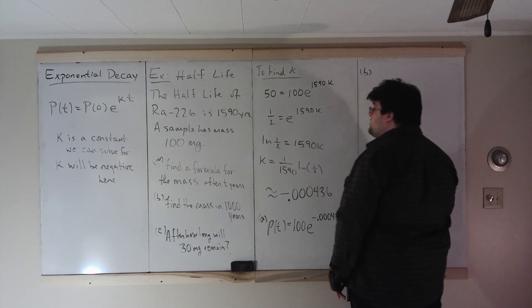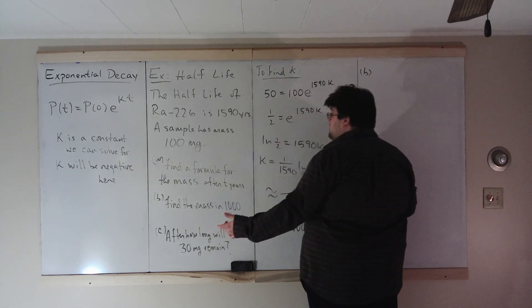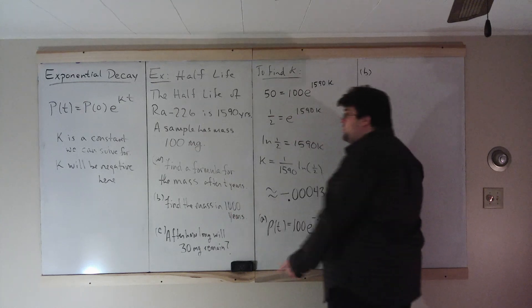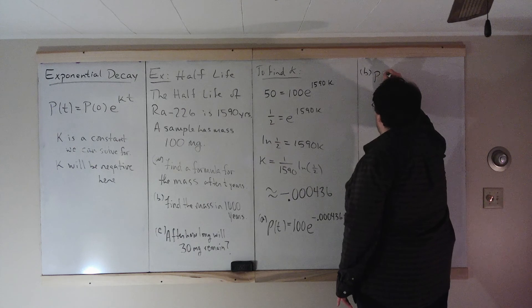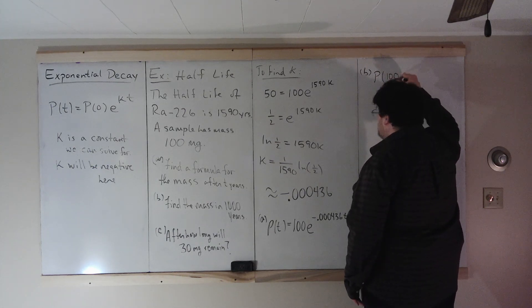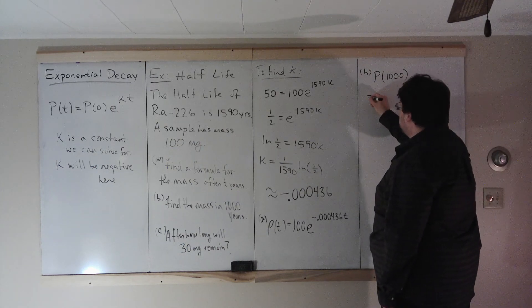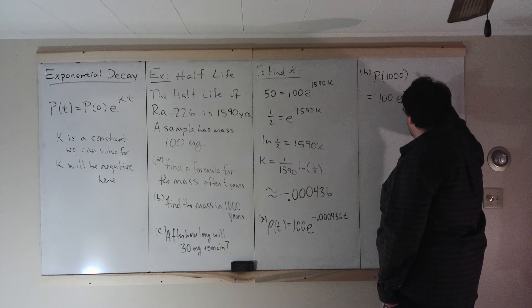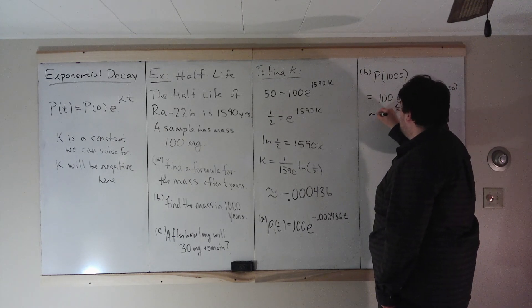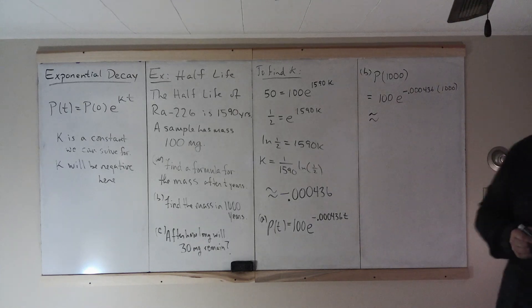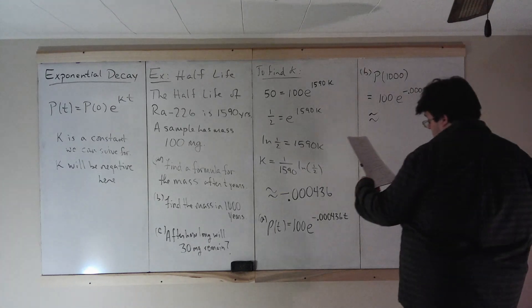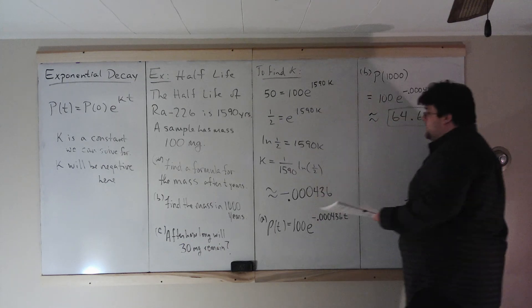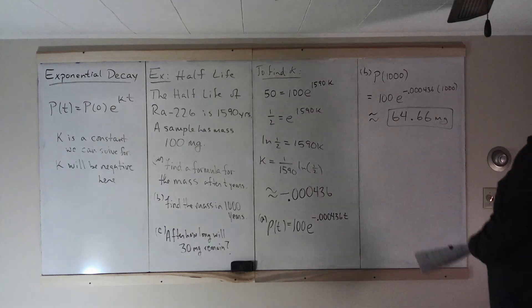Part b, find the mass in 1,000 years. Now, first note, the mass in 1,000 years is going to be larger than 50 because it takes 1,590 years to get down to 50. So in 1,000 years, half of it won't have decayed. And we'll check that our answer does give us something larger than 50. P(1000) is 100 e to the negative 0.000436 times 1,000. And what does this equal? This is 64.66 milligrams, which is larger than 50. So that answer does make sense.